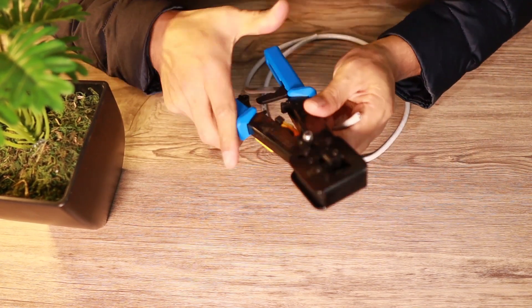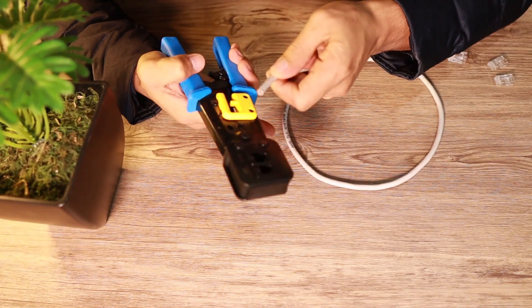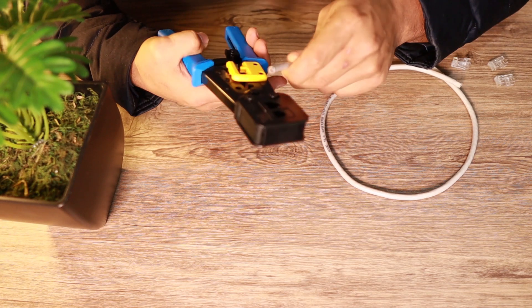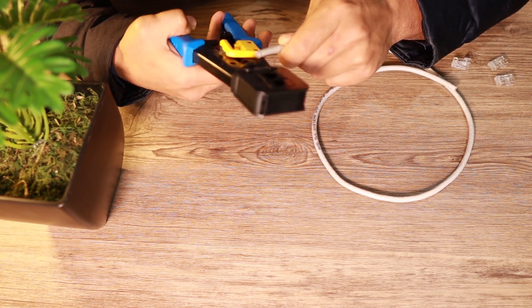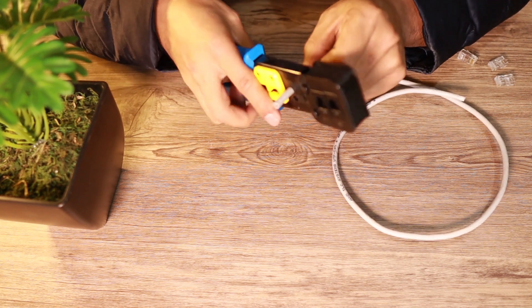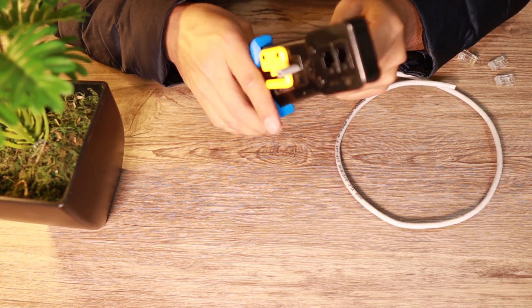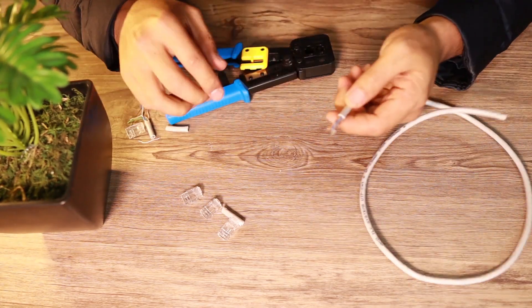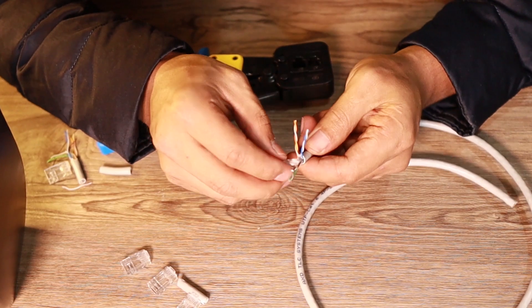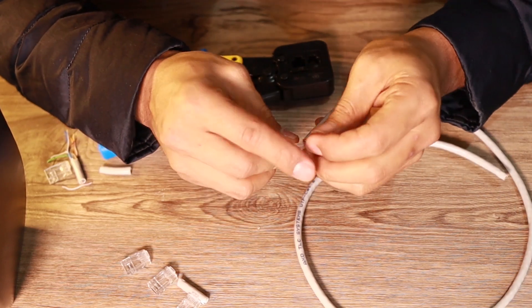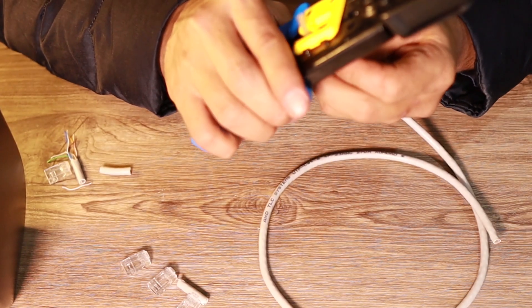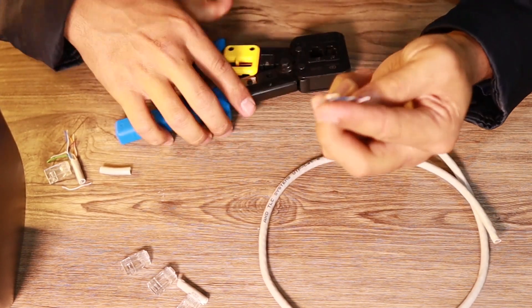Basically as a normal crimping tool you will have the wire stripper here that you can use like that, then I'll just cut this one off. If you have been doing this one then you know.